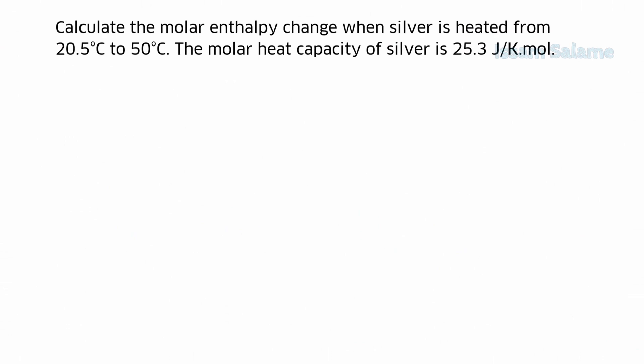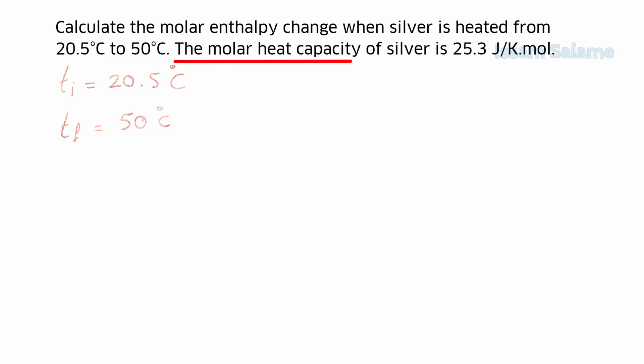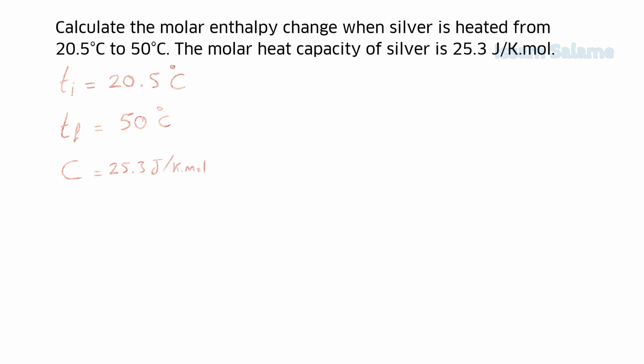Calculate the molar enthalpy change when silver is heated from 20.5 degrees Celsius to 50 degrees Celsius. The molar heat capacity of silver is 25.3 joules per Kelvin·mole. We start with the given as usual: the initial temperature is 20.5°C, the final temperature is 50°C, and the molar heat capacity is 25.3.